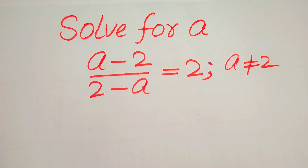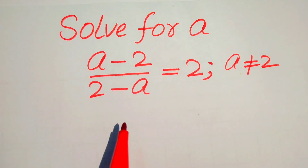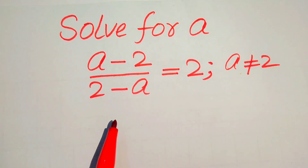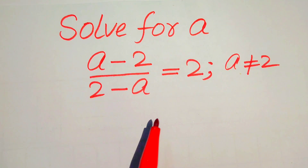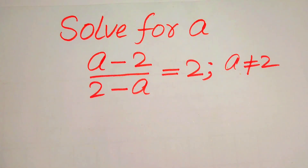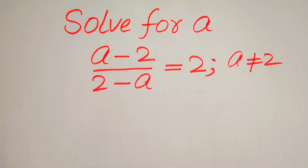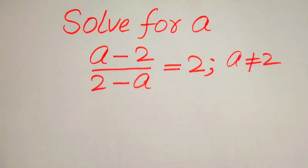Hello everyone. How to solve this problem for the values of a: (a minus 2) divided by (2 minus a) is equals to 2, and we solve this problem for the values of a.